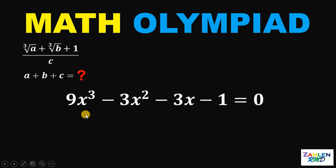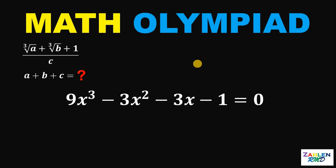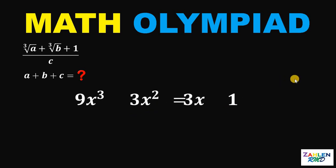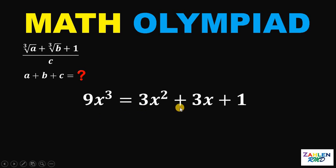Given this equation 9x cubed minus 3x squared minus 3x minus 1 equals 0, and it has one real root in the form of cube root of a plus cube root of b plus 1 over c, our goal is to solve for a plus b plus c. Notice that the last three terms are all negative, so let's make them positive by adding 3x squared, 3x, and 1 on both sides. This gives us 9x cubed equals 3x squared plus 3x plus 1.